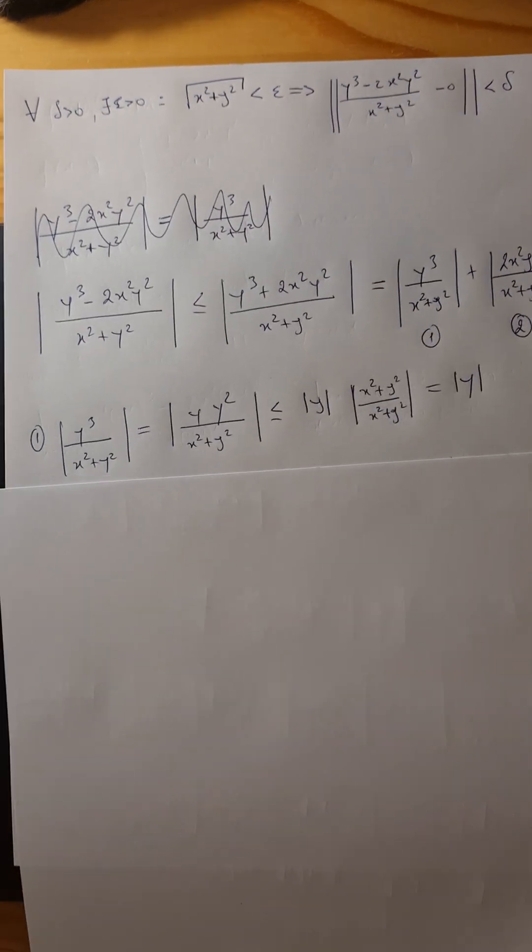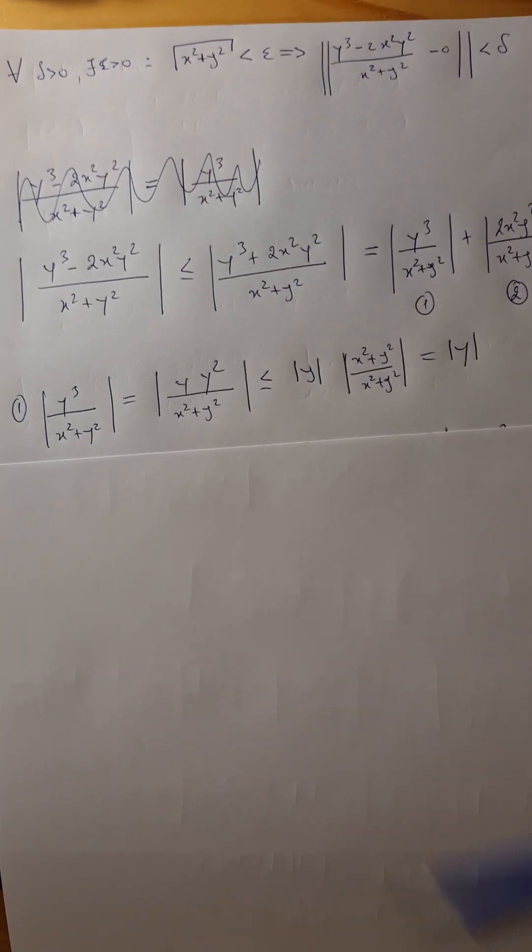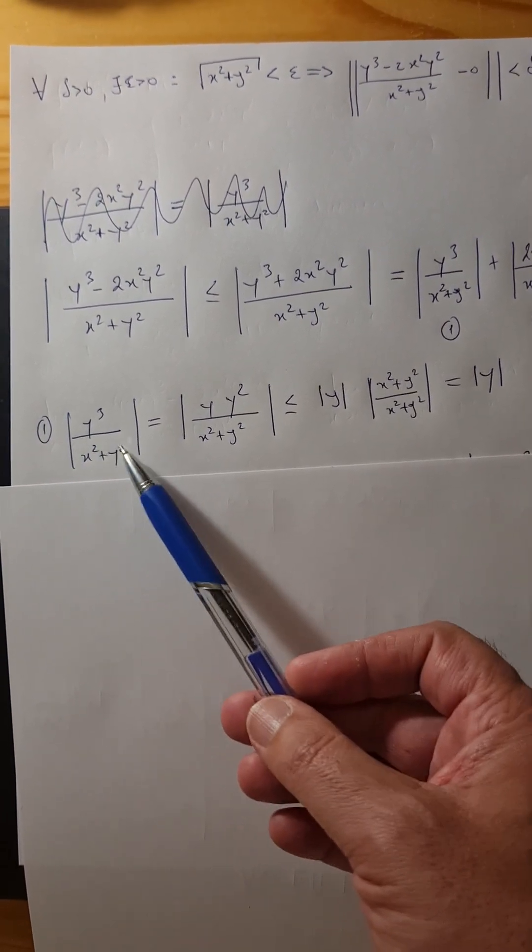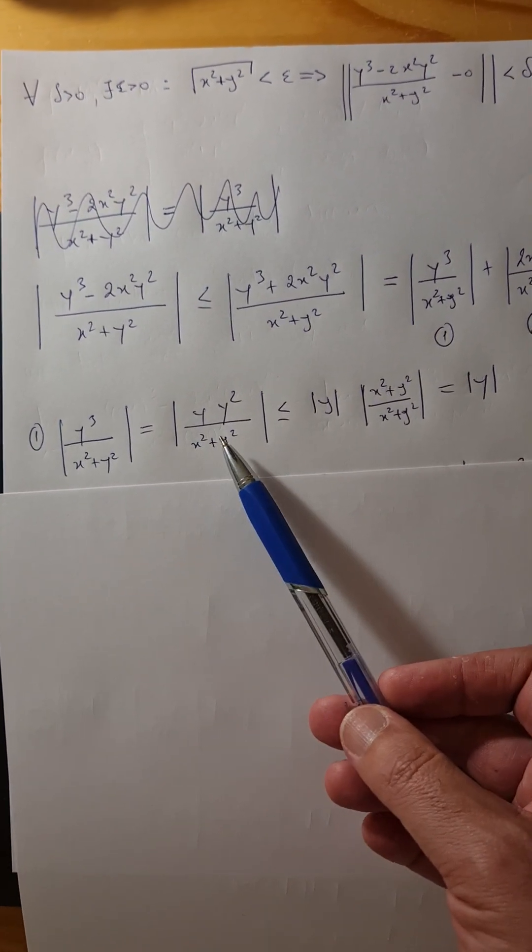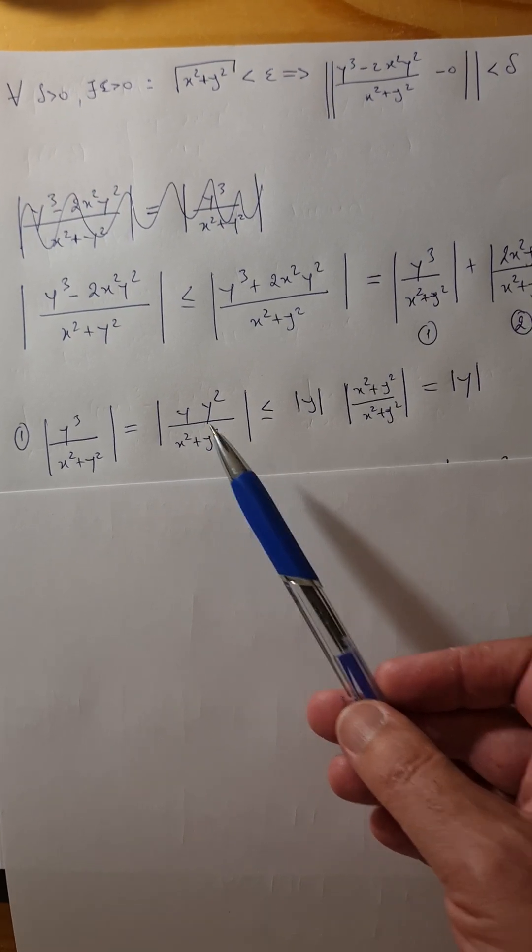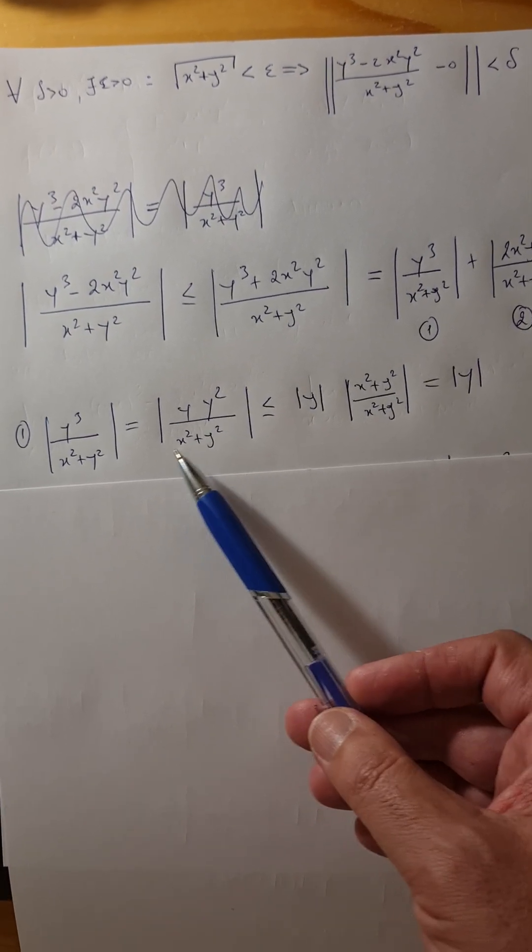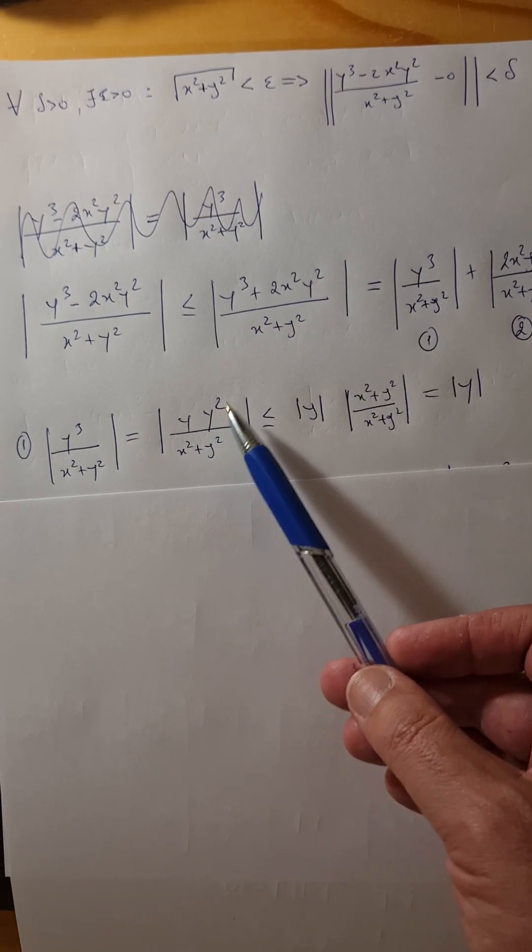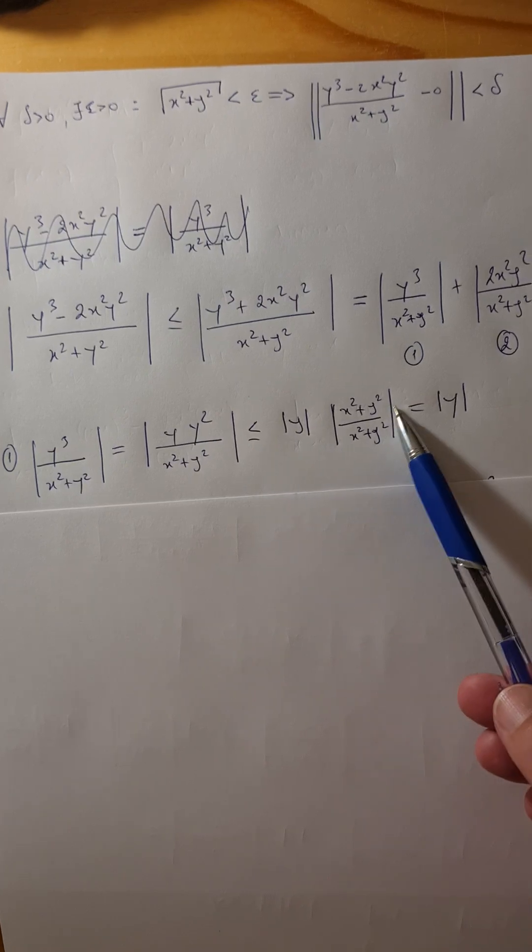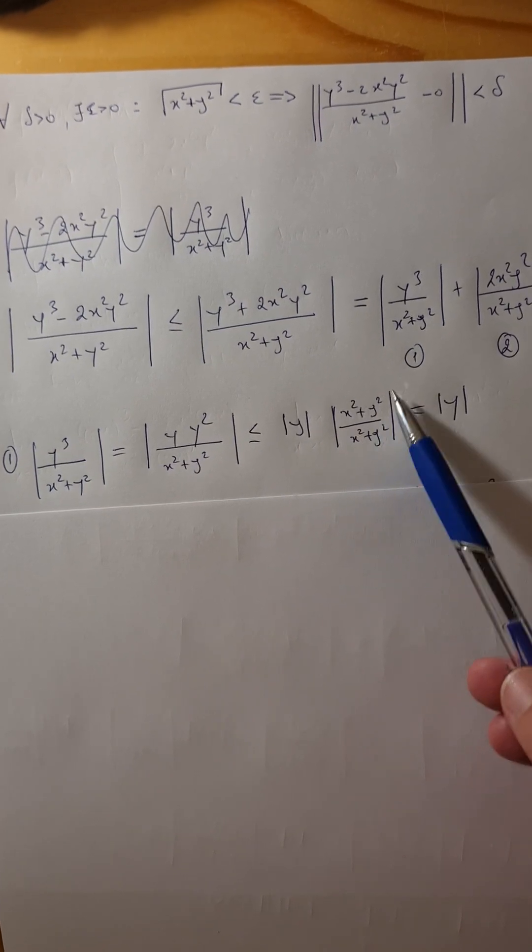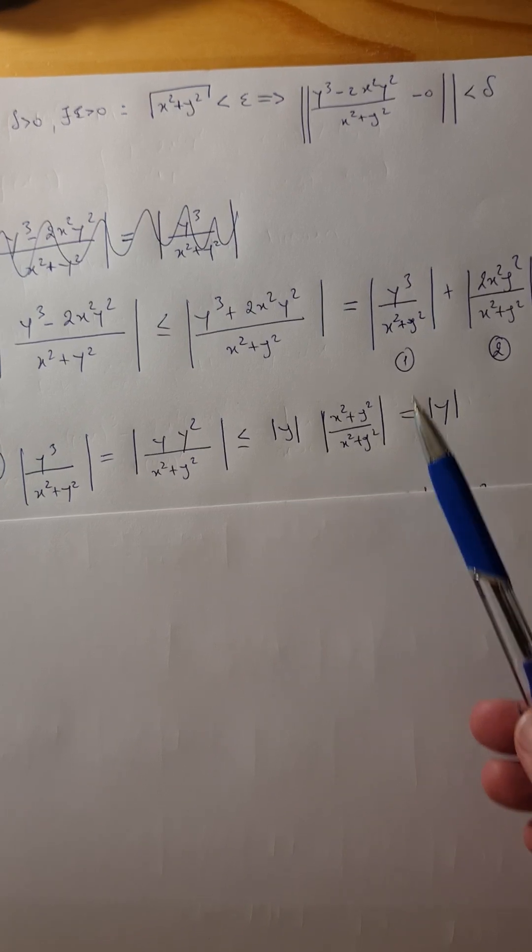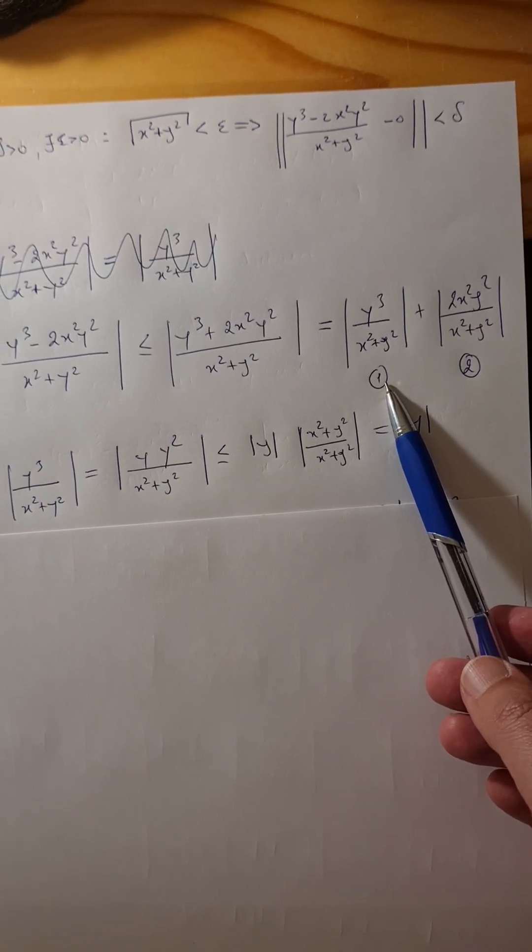So let's work with the first one. Absolute value of y to the power of 3, so this is a product. We can take y out, we get y to the power of 2. And here, this is a majorization, so we can add x². It cancels and we get only this. So the left side is done.